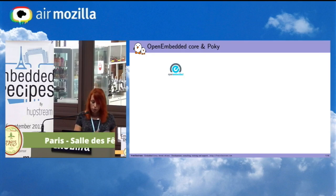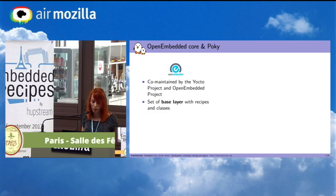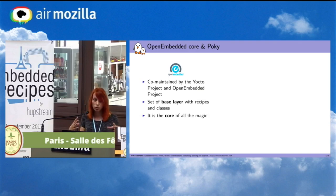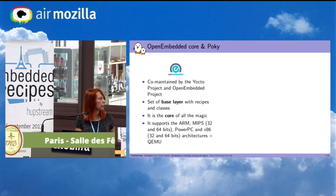Let's see what OpenEmbedded Core and Poky are. OpenEmbedded Core is co-maintained by the Yocto project and the OpenEmbedded project. It's a set of base layers with recipes and classes. You can see it as the core of all the magic. It supports architectures such as ARM, MIPS, PowerPC, x86, and also QEMU.